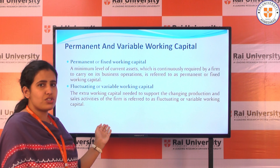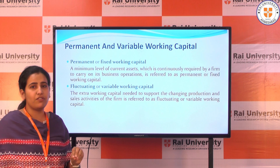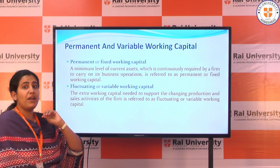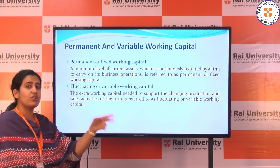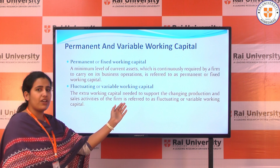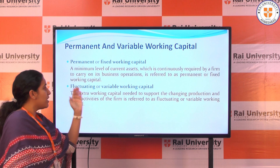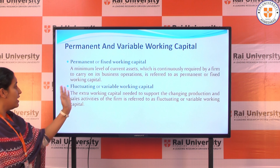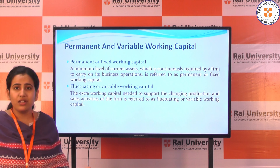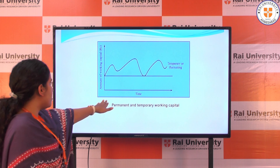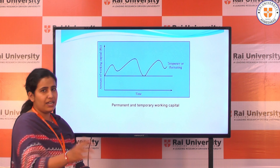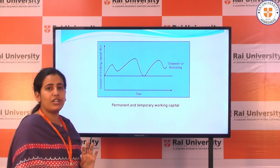On the basis of time, we have permanent and variable working capital. Permanent or fixed working capital is the minimum level that any organization maintains — the amount required by a firm to carry out its business operations. Temporary, fluctuating, or variable working capital is the extra working capital needed to support changing production and sales activity. On a graph, the horizontal line represents permanent working capital, and the line moving haphazardly represents the fluctuating or temporary working capital.